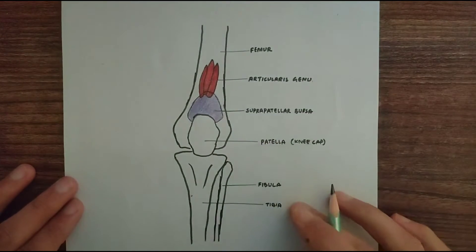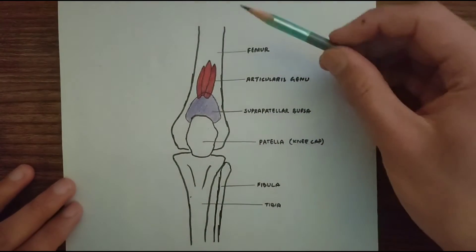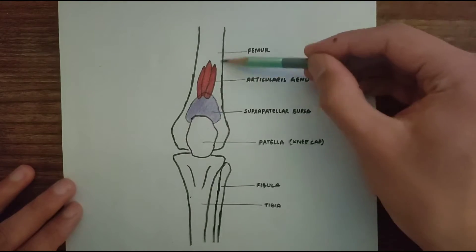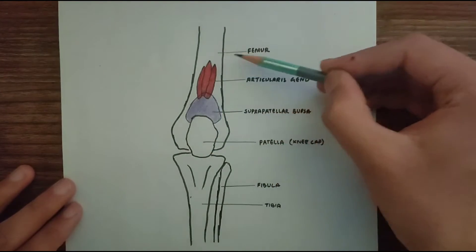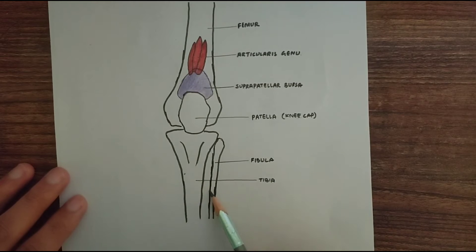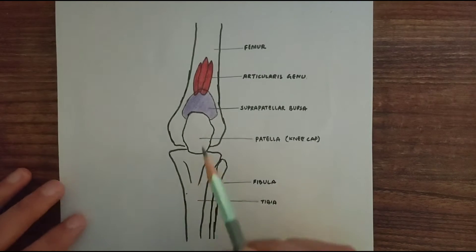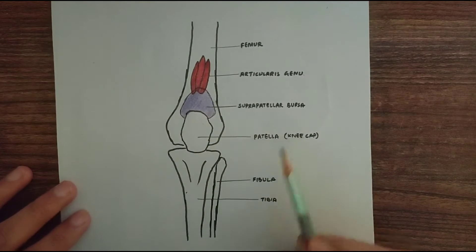Before starting, let's see the structures which are present in this diagram. First of all we have got the femur bone, then we have tibia and fibula, bones of the leg, and this is the patella, the kneecap.